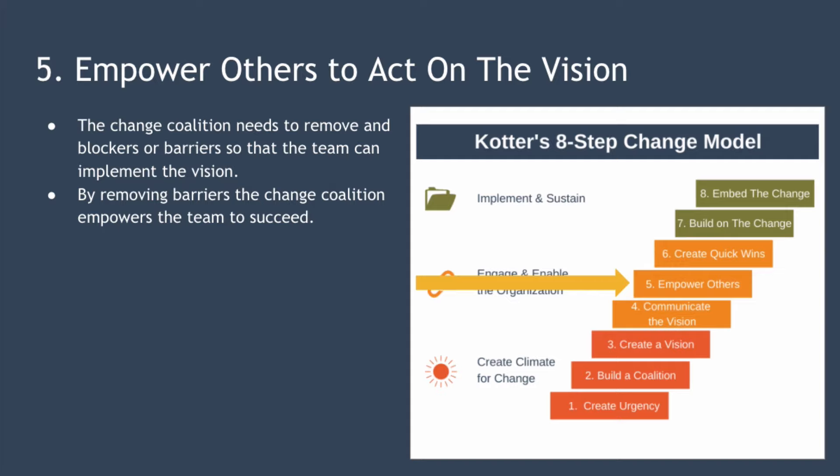Step five is empower others to act on the vision. Until now, you've been painting a picture of the vision to inspire your team. But now the entire change coalition needs to step up and remove any blockers or barriers so that the team can get on and implement the vision. This could mean a number of things, including providing training or coaching so your team has the skills they need, or creating an organizational structure, either temporarily or permanently.